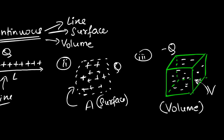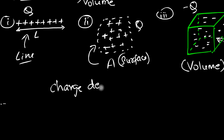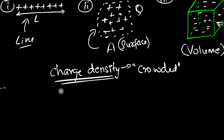Before I work out an example, which we'll do in the next video, I want to talk about something called charge density. It's going to be a very important quantity when talking about continuous charge distribution. Density is a measure of crowdedness — charge density tells us how crowded charges are. Depending on whether it's a line, area, or volume distribution, we calculate charge density as charge per length, charge per area, or charge per volume.